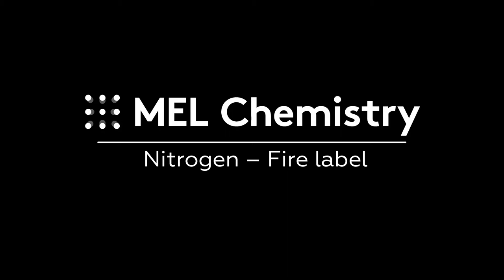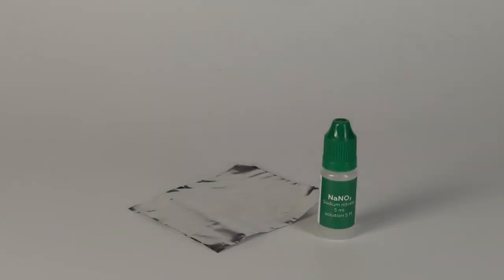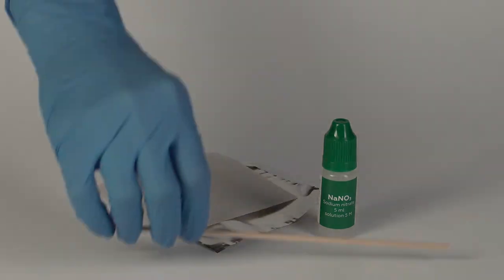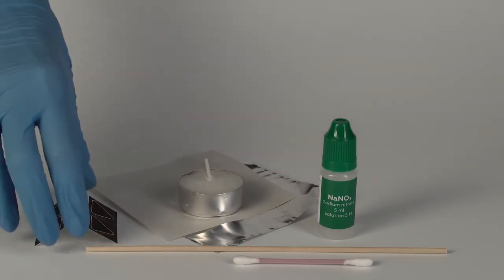For the fire label experiment, you will need the sodium nitrate solution, a piece of foil, a sheet of paper, a splint, a cotton swab, a candle, and thermochrome stickers.